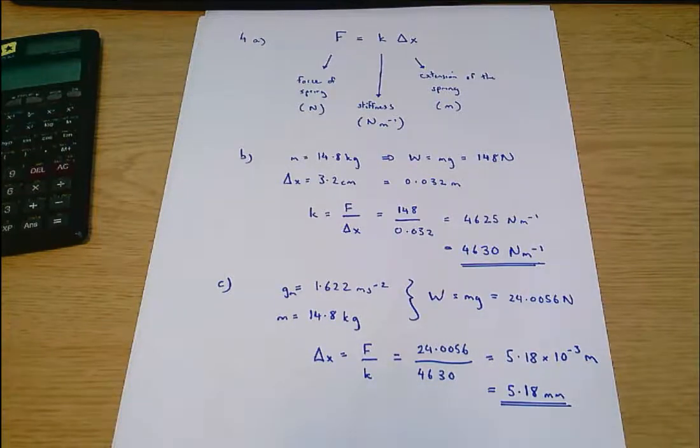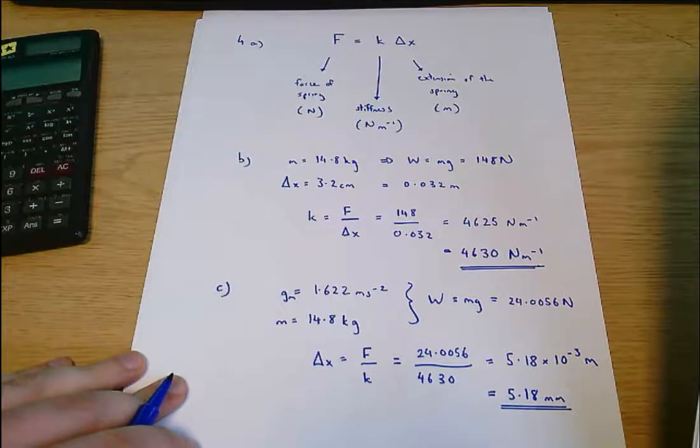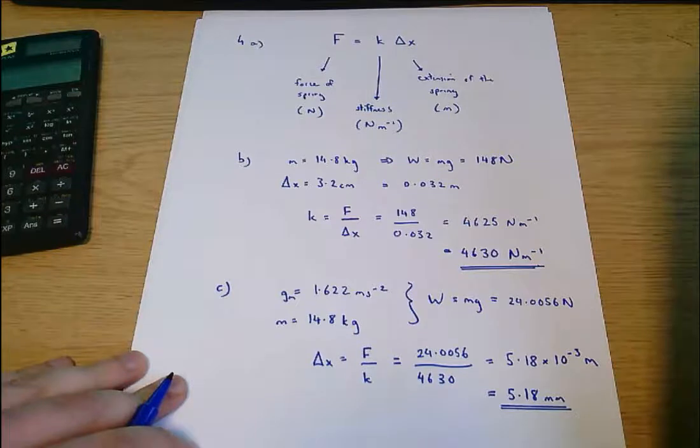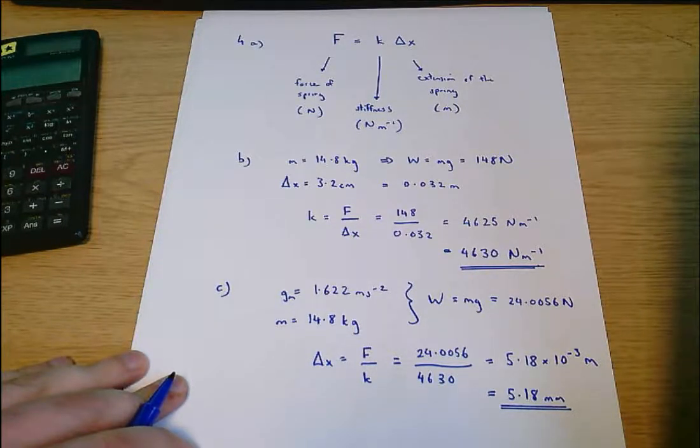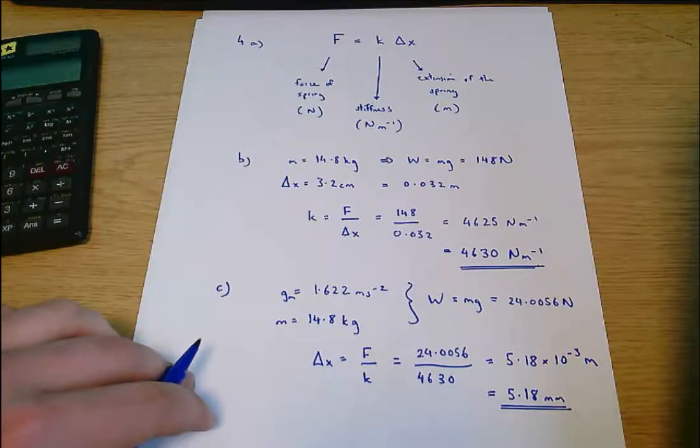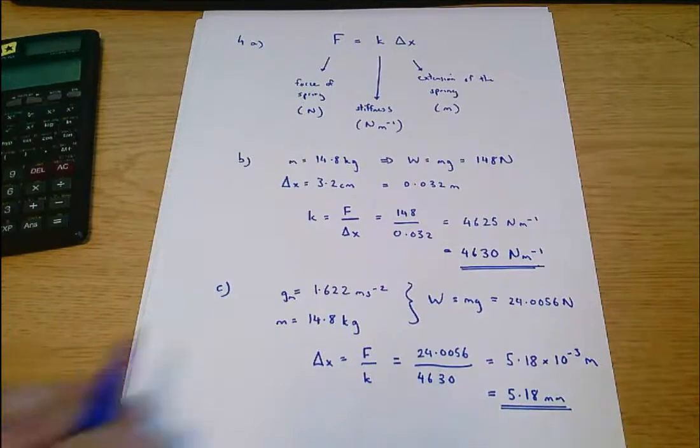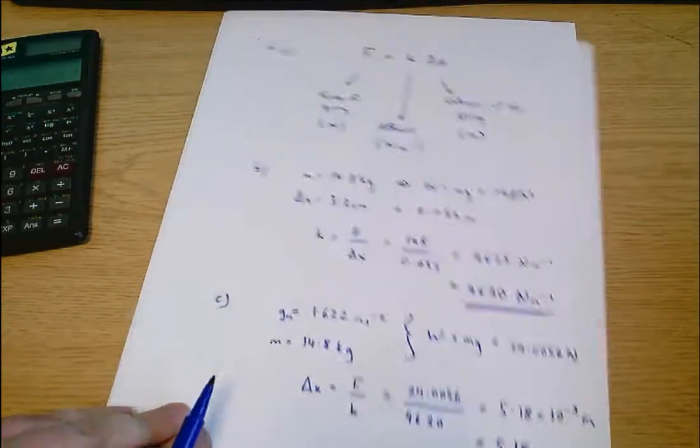And then finally in part D we're asked about a spring. We're given a stiffness and it's compressed by an initial load of 5 kilonewtons which is gradually applied. Once this load has been applied. The spring is further loaded to compress it an additional distance of 500 millimeters. Calculate the total work done on the spring. There's a bit of work to be thought about here. So I'm just going to start a new page.